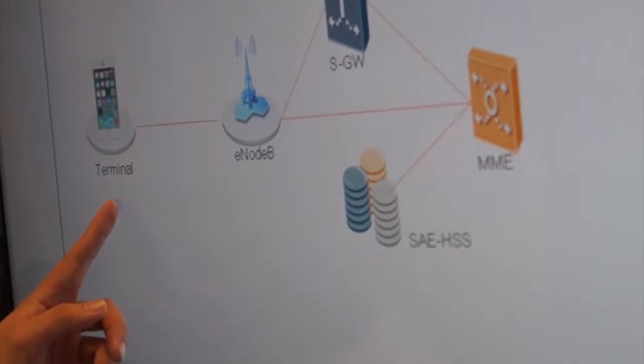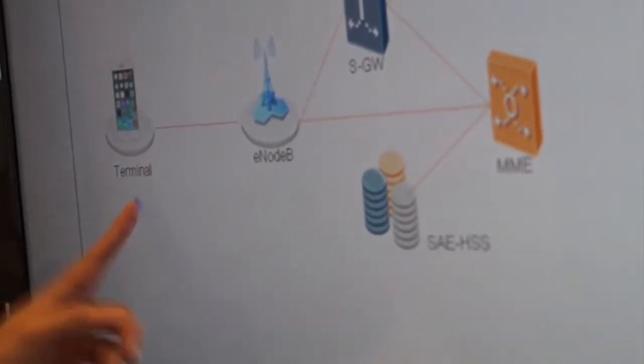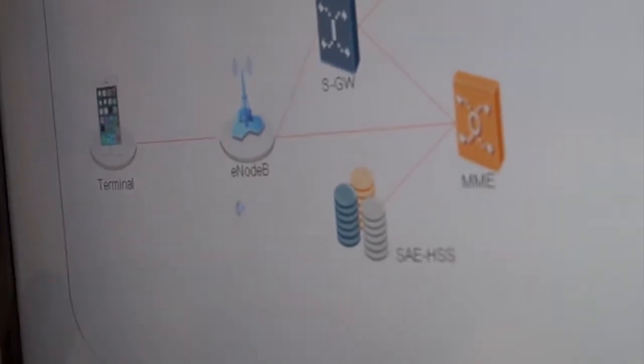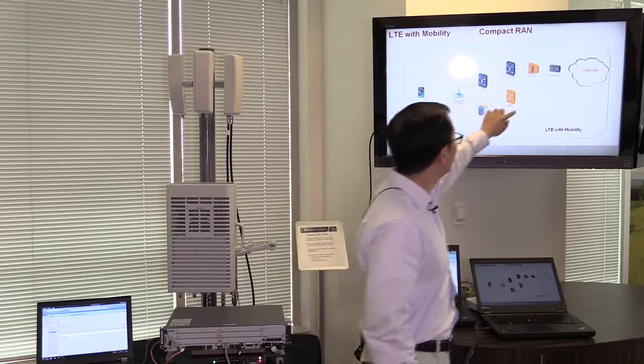We have the terminal, or the UE, the user equipment, and then we have the eNodeB, which is the radio access part of the network. And then this part over here, several network elements. These are the core network part of the LTE, and it's called the EPC, or the Evolved Packet Core.